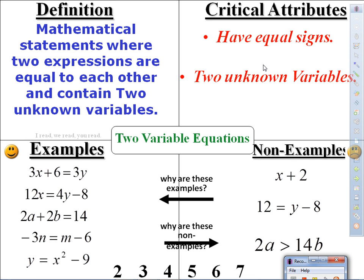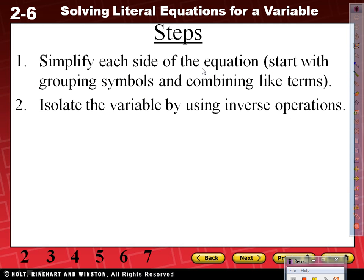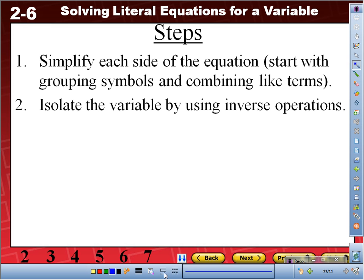Let's write the steps down. We know all four steps to solve equations — simplify, isolate, plot, check. But today we're only going to use the first two. Step one: simplify each side of the equation, starting with grouping symbols and combining like terms. Step two: isolate the variable by using inverse operations. Circle the word 'simplify' and the word 'isolate.'